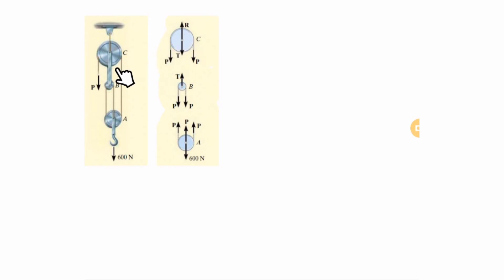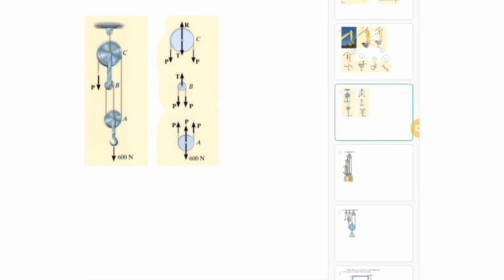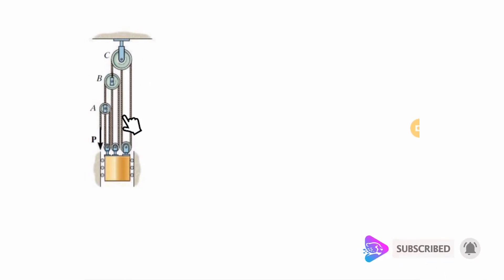You need to do free body diagrams for each pulley, and for the cable just follow the line and assign the same tension wherever it applies. Now a different example: here the cable wraps around with one, two, three, four connections — meaning there are multiple separate cable segments around different pulleys. Here you have three different pulleys and three different cables, giving three different tensions.